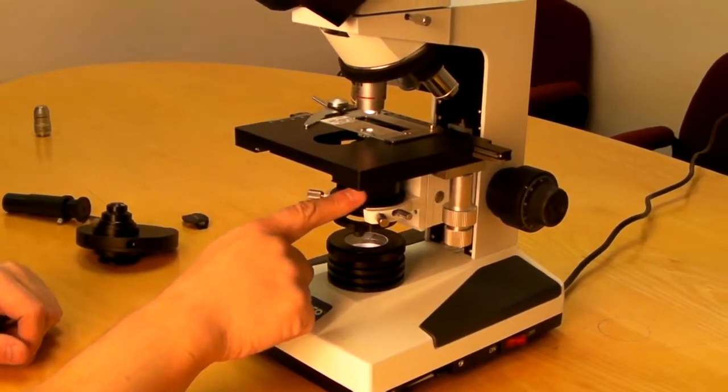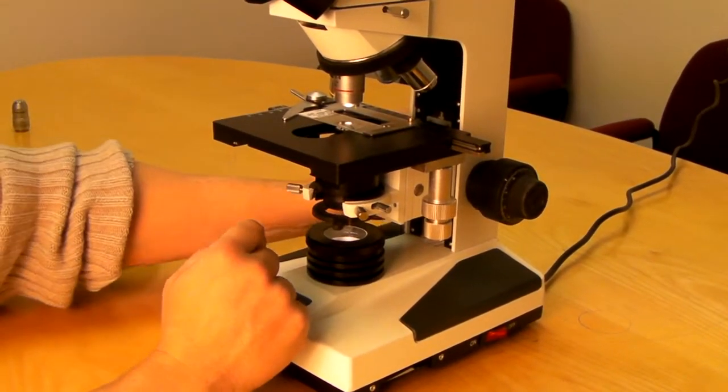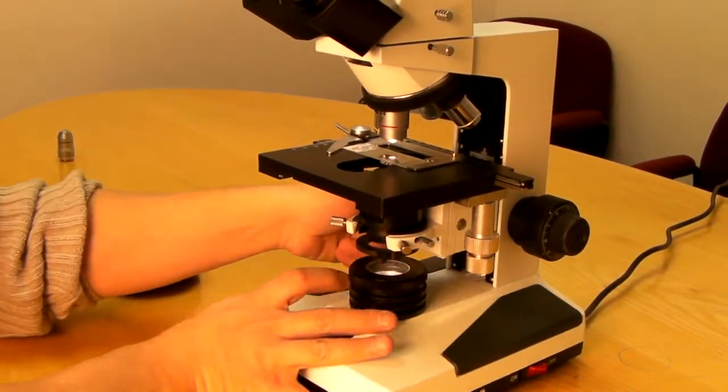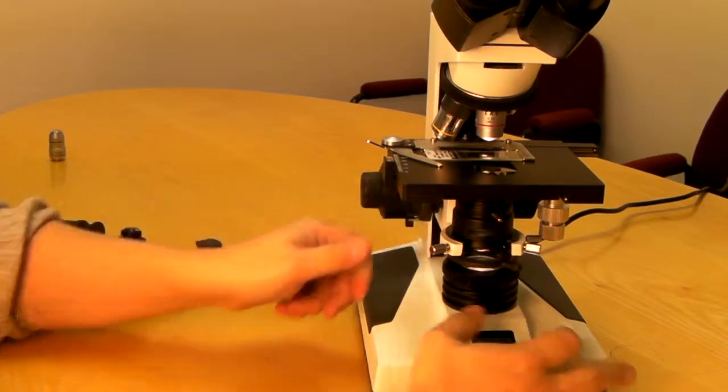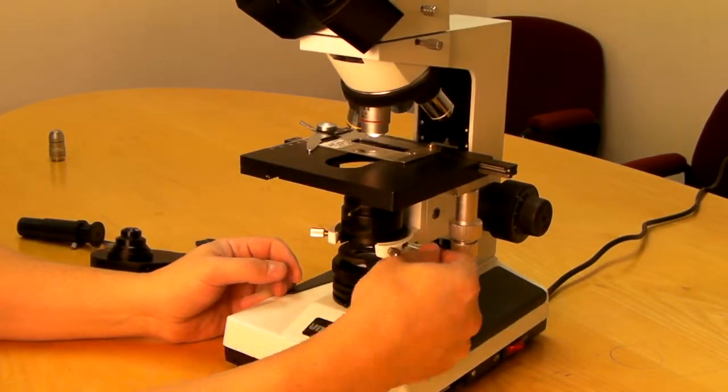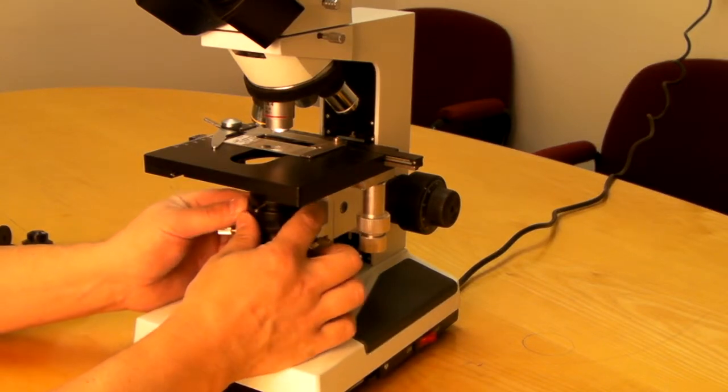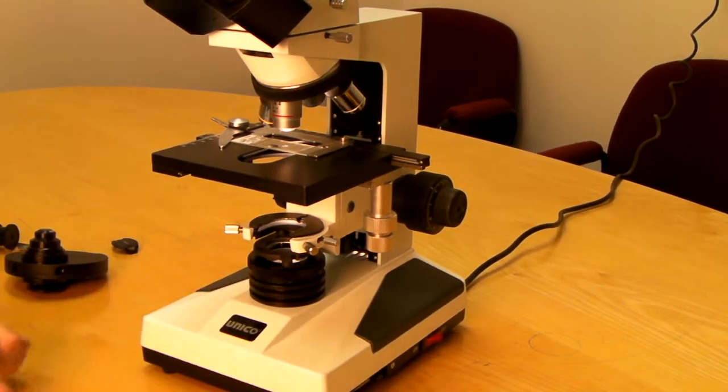First of all, we need to remove the condenser. You need to bring the stage all the way up and your condenser all the way down. Release the condenser and carefully remove it from its holder.